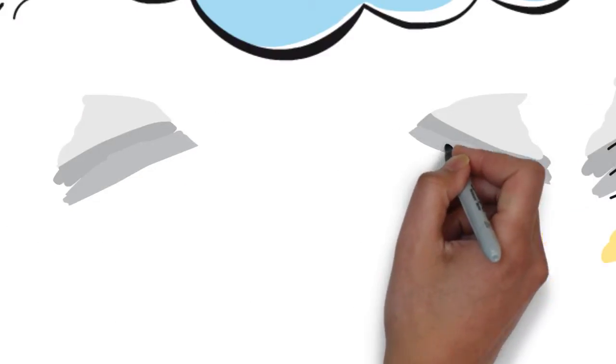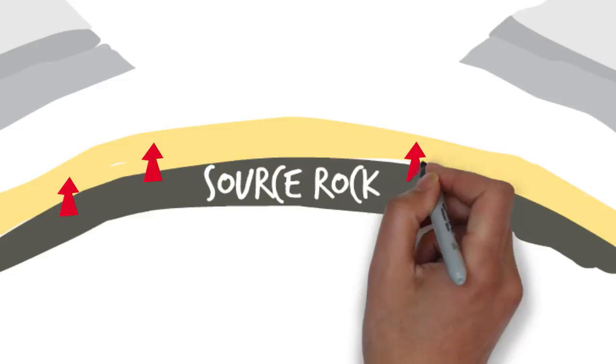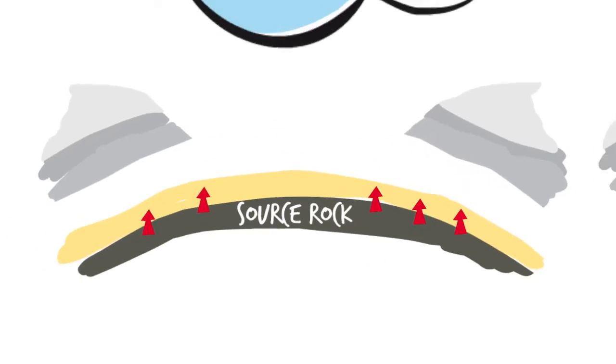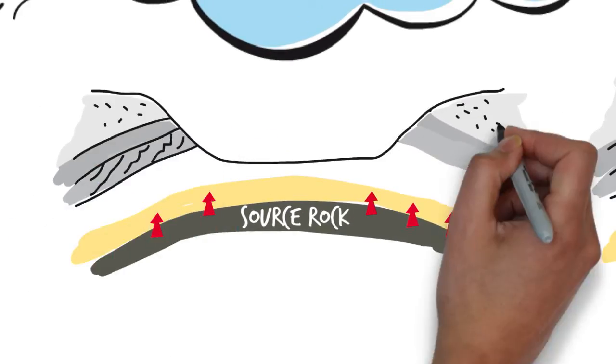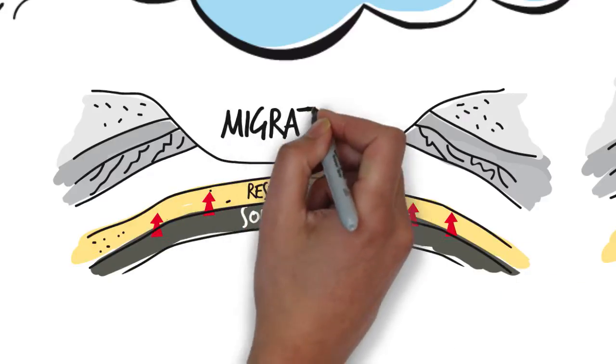Once the hydrocarbons have been expelled from the source rock, they move through the subsurface thanks to the porosity and permeability of certain rocks. The porosity and permeability of the rocks also makes it possible for them to store hydrocarbons.